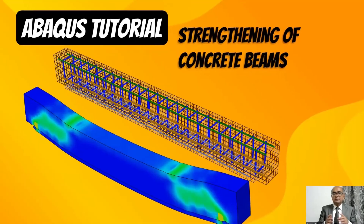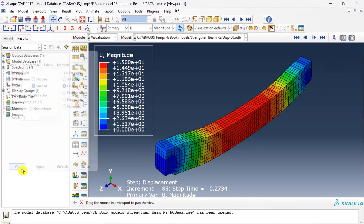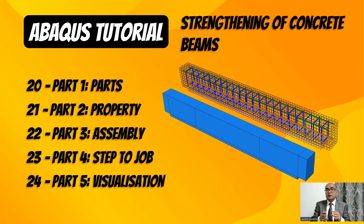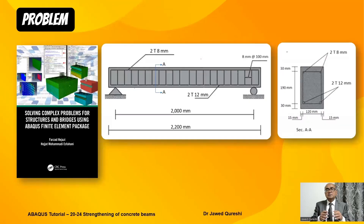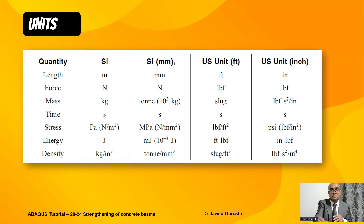Welcome to this five-part series on strengthening of reinforced concrete beams with CFRP jacketing using Abaqus. In the first video I will talk about creating the geometry using the Parts module. The series is divided into five parts: first is creating geometry, second is material properties and sections, third is assembling parts, fourth is meshing, loading, boundary conditions, contact interactions and job submission, and fifth is viewing the results. The material properties are given in the reference book and I will be using SI units in millimeters.